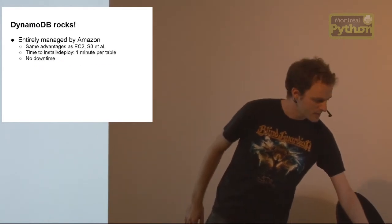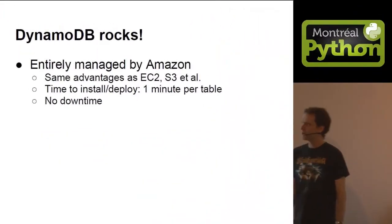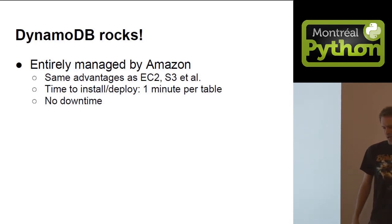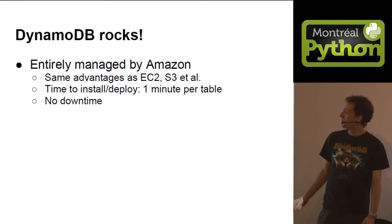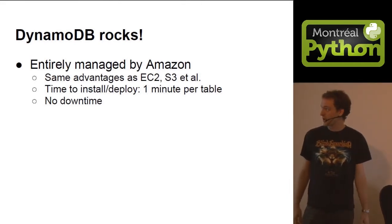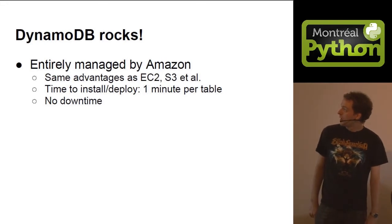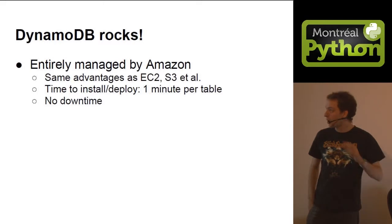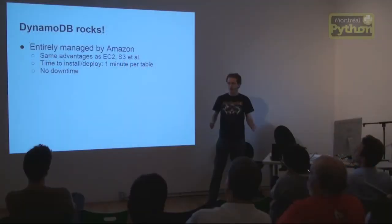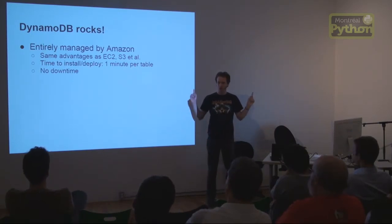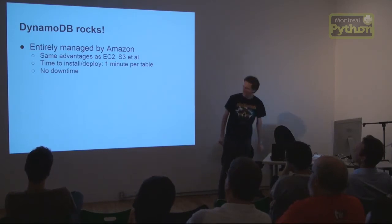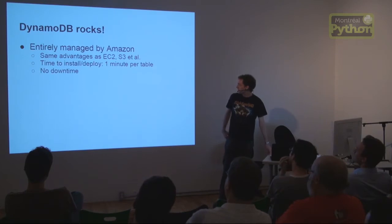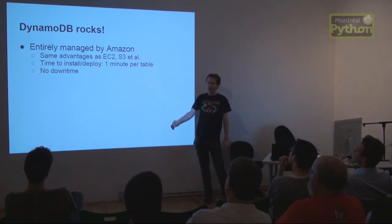DynamoDB rocks. It is awesome. It is fast. It is entirely managed by Amazon. Unlike the rest of Amazon Web Services, it actually kept working today — which is awesome. It has the same advantages as EC2 and others: the entire time to deploy is one minute per table, you don't need to spin up new instances, and you don't need to install any software. It can be troublesome when running unit tests, but in production it's great.